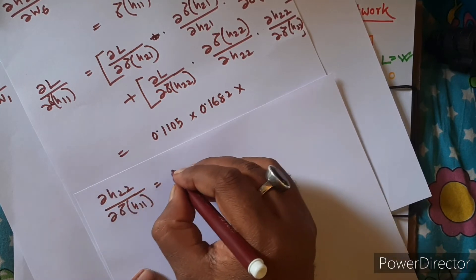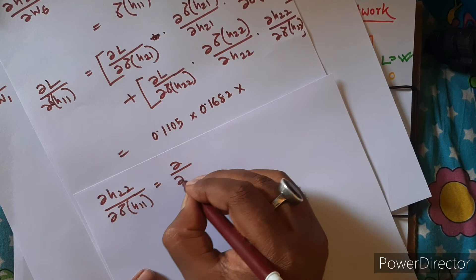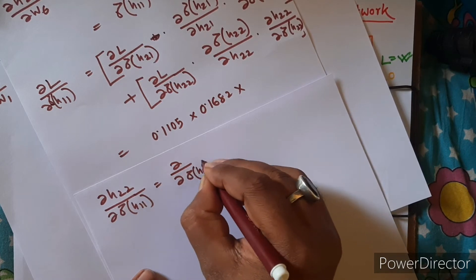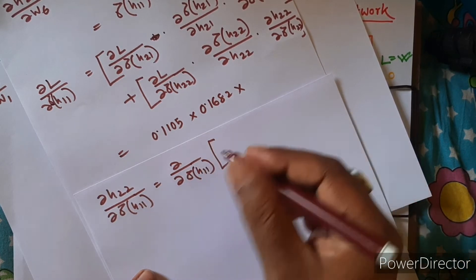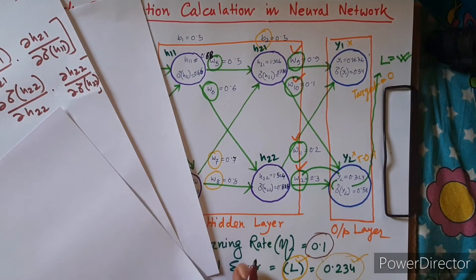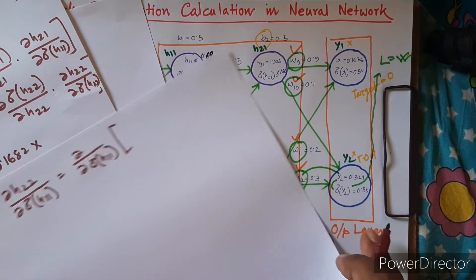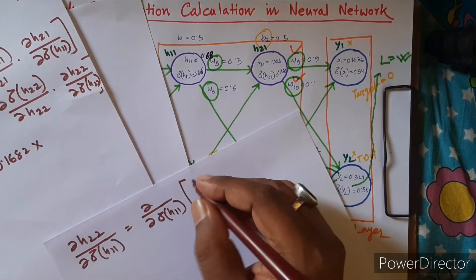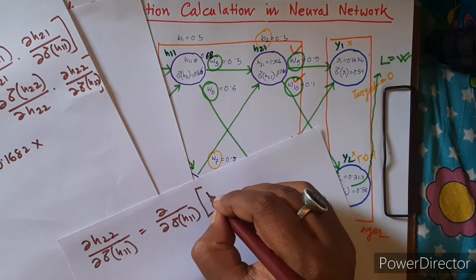It's very easy now because you know how to do it. You just need to break down H22, right? H22 is actually sigma of H11 into W6.